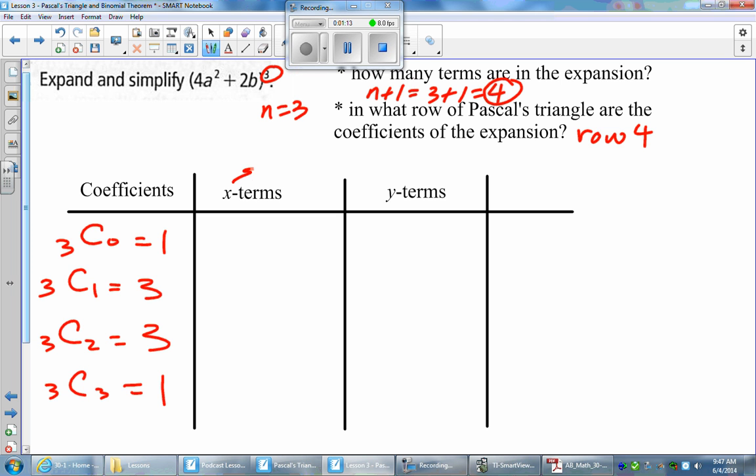Now we go to our x terms. Remember, x terms are the first term of the expansion. The first term of the expansion is 4a squared. X terms are decreasing in power by 1, so we're going to start with the power of 3. We start with the n value. Then we go to 4a squared raised to a power of 2. And then 4a squared to a power of 1, and then 4a squared to a power of 0, which will just give you 1. We'll just leave it as is and then eventually simplify that.